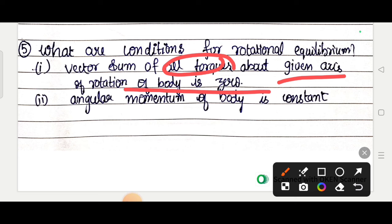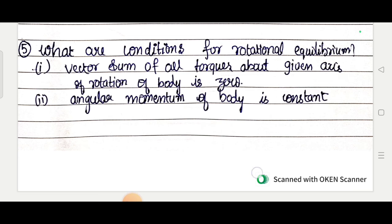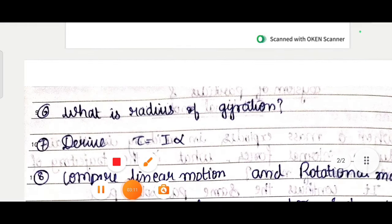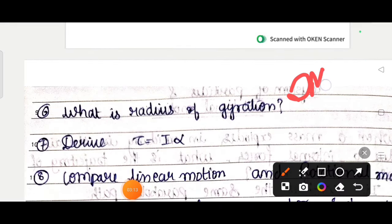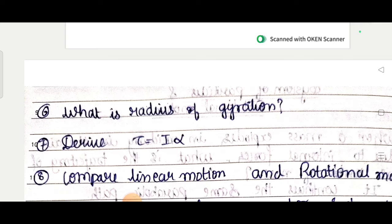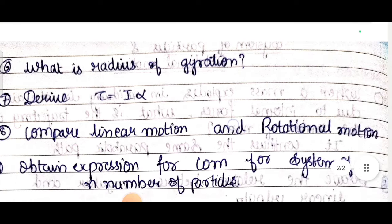Next, what is radius of gyration? This is important for 2 or 3 marks. And derive tau equals I alpha - this is very much similar to F equals ma. In rotational motion, this needs to be proved - important for 5 marks.